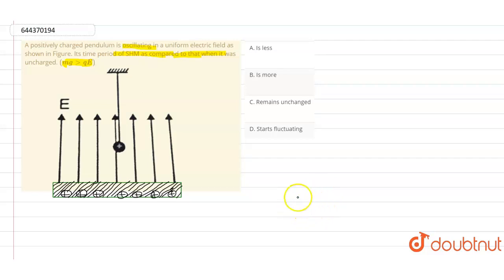Will be equals to 2π times the square root of l divided by g effective. So here g effective, this term is nothing but the effective acceleration due to gravity and some other factors.